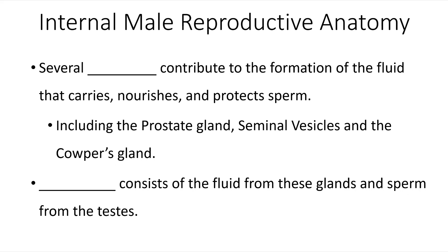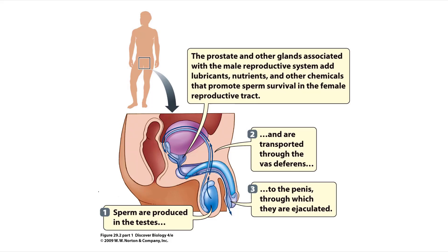Internally, there are several glands which contribute to the formation of the fluid that carries, nourishes, and protects the sperm. This includes the prostate gland, the seminal vesicles, and the Cowper's gland. Semen consists of the fluid from these glands and sperm from the testes. During copulation, sperm are produced in the testes and transported through the vas deferens to the penis, through which they are ejaculated. The prostate gland and other associated glands provide lubricants, nutrients, and other chemicals that promote sperm survival in the female reproductive tract.